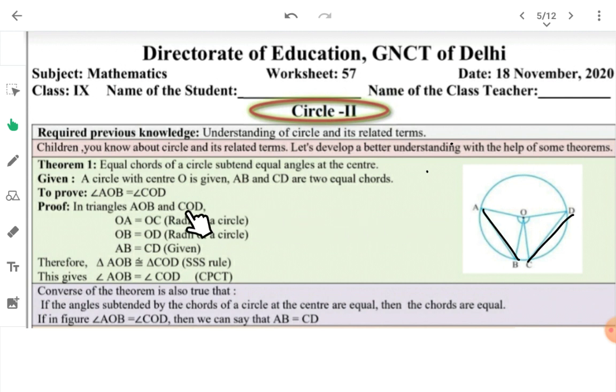According to the theorem, they should subtend equal angles at the center. We have to prove angle AOB is equal to angle COD. Now look at these two triangles. In triangle AOB and triangle COD, we have OA equal to OC because they are radii of the circle. Radius ka plural hota hai radii. Similarly, OB equal to OD, they are also radii of the circle.